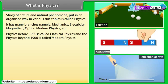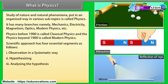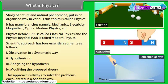Physics before 1900 is called classical physics, and physics beyond 1900 is called modern physics. The scientific approach has four essential segments: (1) observation in a systematic way, (2) hypothesizing, (3) analyzing the hypothesis, and (4) modifying the proposed theory. This approach is always used to solve problems encountered in a scientific way.